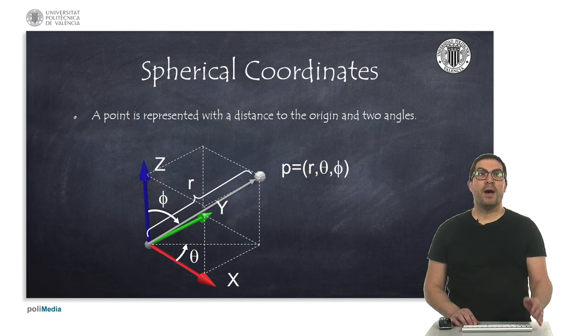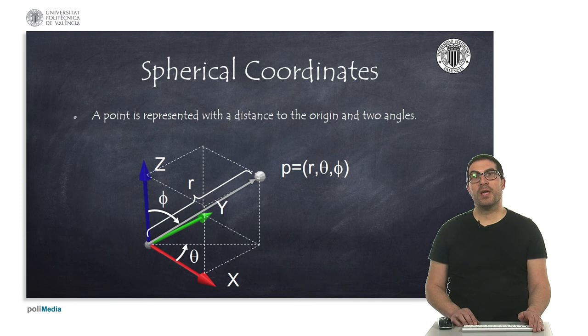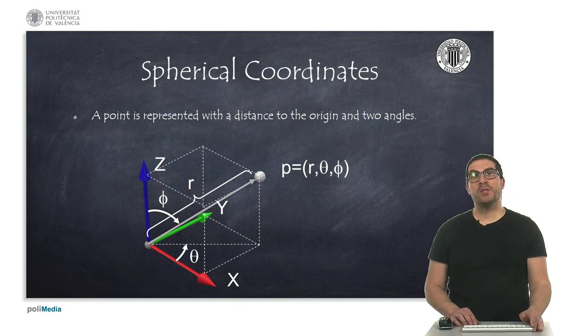Similarly, spherical coordinates use, in this case, polar coordinates to represent a distance and an angle. In this case, we use two angles.